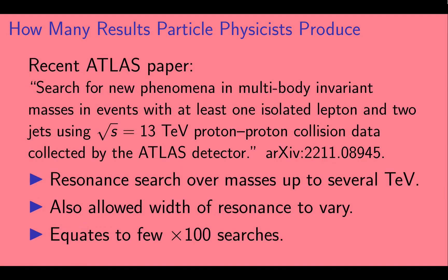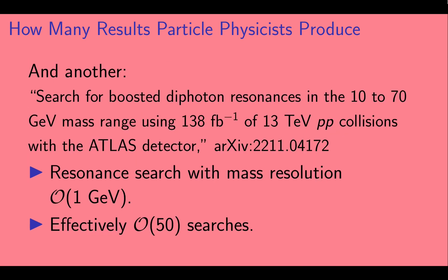As an example, let's look at this recent paper from ATLAS. This paper describes a search for a new particle with a mass anywhere in a range over several TeV. Additionally, the decay width of the particle was allowed to vary. This paper equates to doing a few hundred separate measurements. Or we can look at this paper, also very recently put out by ATLAS. Here they looked for a new particle whose mass they took to be between 10 and 70 GeV. Their mass resolution was of order 1 GeV. So this paper effectively contained of order 50 separate measurements.